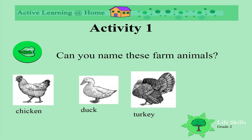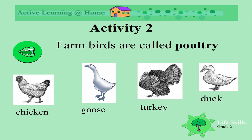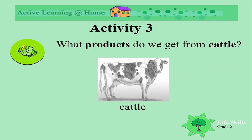Here is a turkey and this is a goose. Farm birds are called poultry — chicken, goose, turkey, and duck. All these different types of animals are called poultry. What products do we get from cattle?